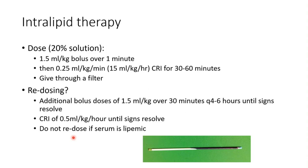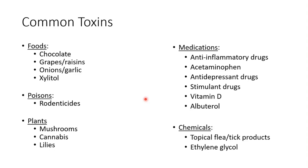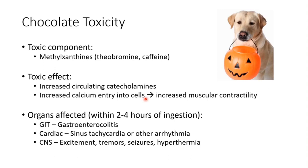That was our review of decontamination. Hemodialysis and hemoperfusion are additional techniques we didn't cover fully — that's a whole other topic. Now we move on to specific toxins, starting with the food group. We'll start with chocolate. The big toxic components are methylxanthines — theobromine being the main one, with caffeine also present.